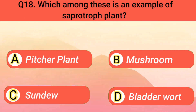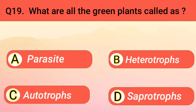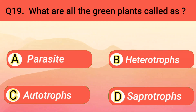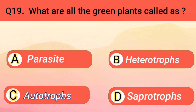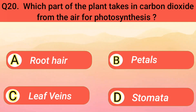Which among these is an example of a saprotroph plant? Mushroom. What are all the green plants called? Autotrophs. Which part of the plant takes in carbon dioxide from the air for photosynthesis? Stomata.